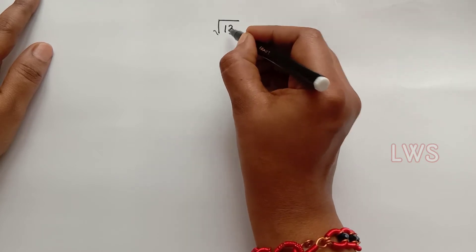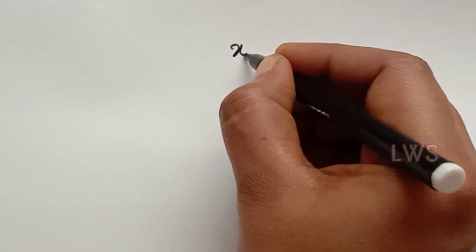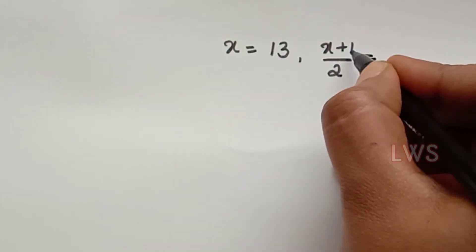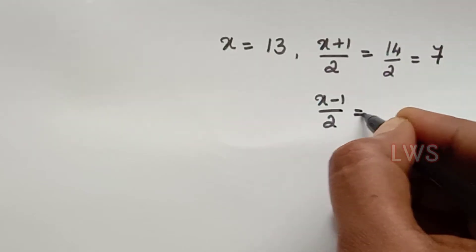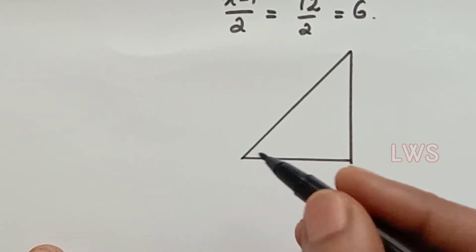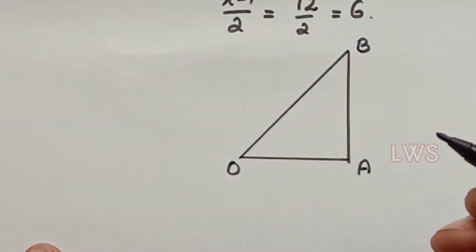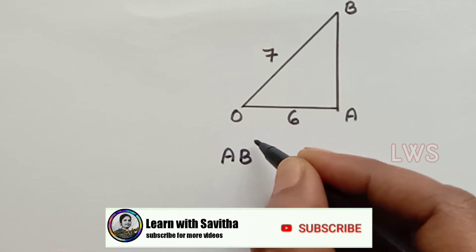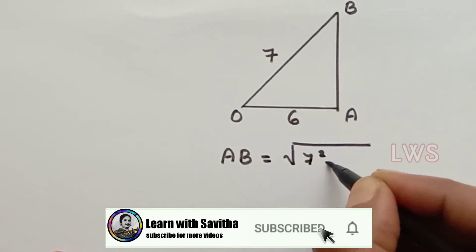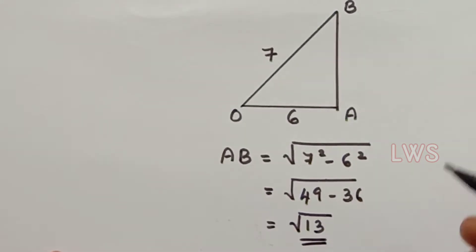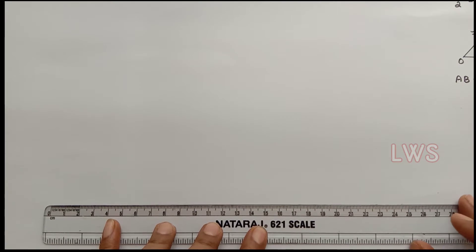Using this method, we can represent root 13 on a number line. We take x equal to 13. So x plus 1 by 2 equals 14 by 2, which equals 7. And x minus 1 by 2 equals 12 by 2, which equals 6. These are the only two numbers we need. We construct a right triangle OAB with OB equal to 7 units and OA equal to 6 units. Then AB equals square root of 7² minus 6² equals square root of 49 minus 36, which equals square root of 13.